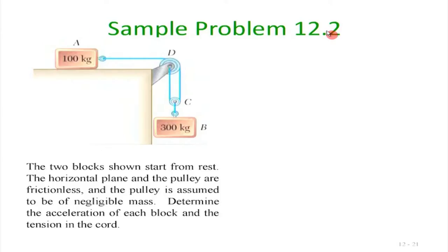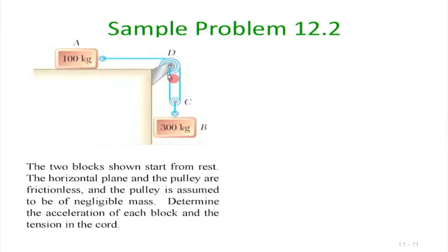Now let us look at another problem from Beer & Johnston — a nice conceptual problem. We have two blocks starting from rest; the horizontal plane and pulleys are frictionless. The small pulley at C has negligible mass. We need to determine the acceleration of each block and the tension in the cord.